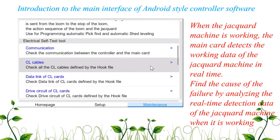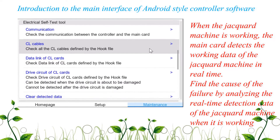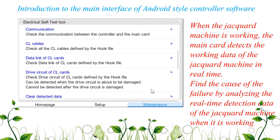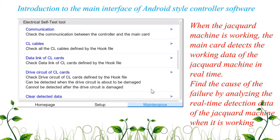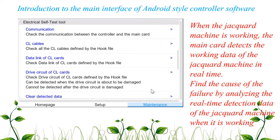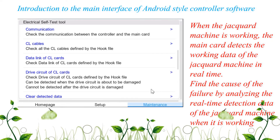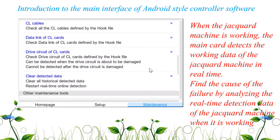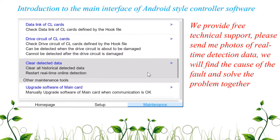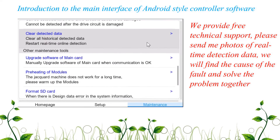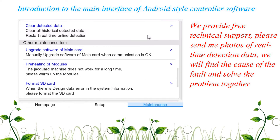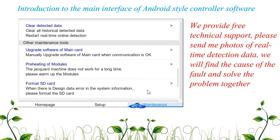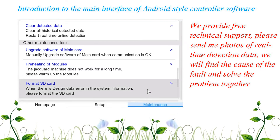When the Jacquard machine is working, the main card detects the working data of the Jacquard machine in real time. Find the cause of failure by analyzing the real time detection data of the Jacquard machine when it is working. We provide free technical support — please send photos of real time detection data and we will find the cause of the fault and solve the problem together.